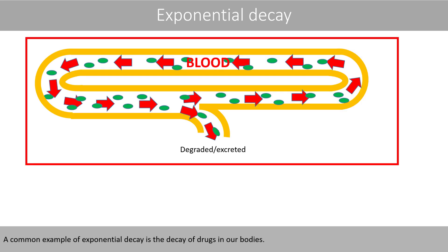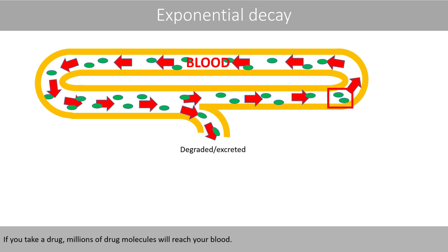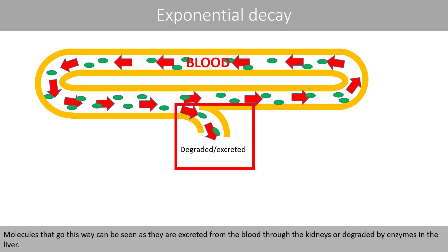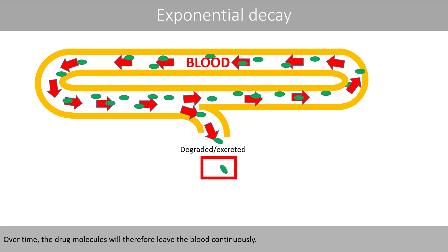A common example of exponential decay is the decay of drugs in our bodies. If you take a drug, millions of drug molecules will reach your blood. Suppose that this crossroad represents a kidney or a liver. Molecules that go this way can be seen as they are excreted from the blood through the kidneys, or degraded by the enzymes in the liver. However, over time, the drug molecules will therefore leave the blood continuously.